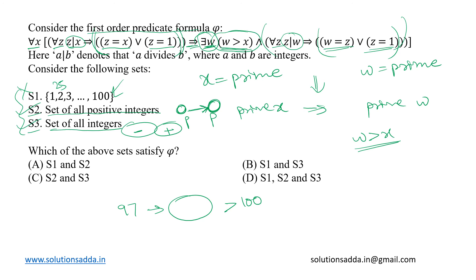Hence both S2 and S3 satisfy the predicate formula, and hence we can go with option C, which is S2 and S3. So that is the correct answer.